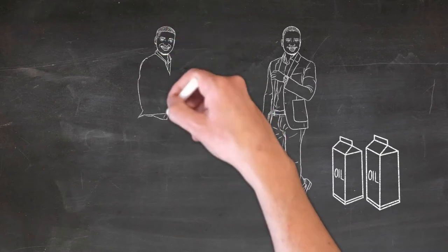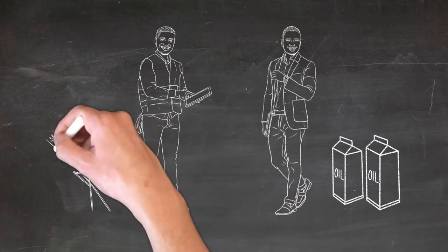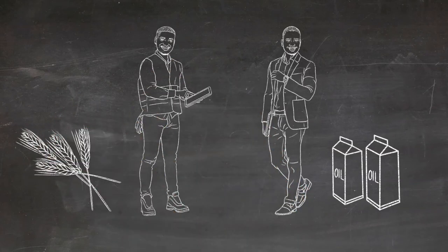Then he asked the second, how much do you owe? He said, a thousand bushels of wheat. He told him, take your bill, and make it 800.